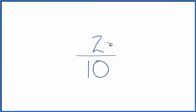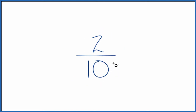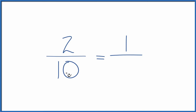If you need to write three equivalent fractions for two-tenths, here's how you do it. First off, we could simplify two-tenths. We have an even number in the numerator and the denominator. Let's divide two by two — that gives us one. If we divide ten by two, that gives us five. So one-fifth is an equivalent fraction to two-tenths.